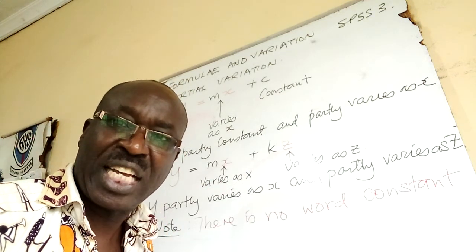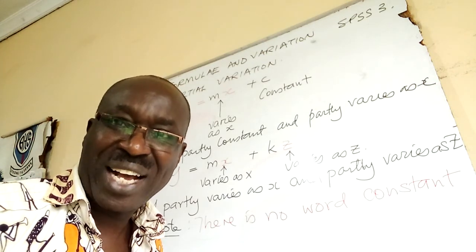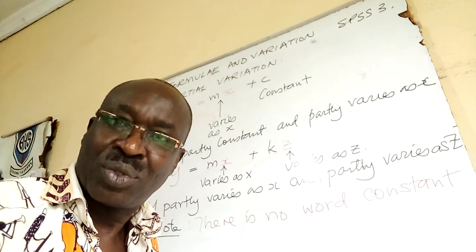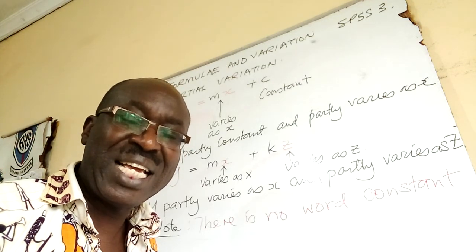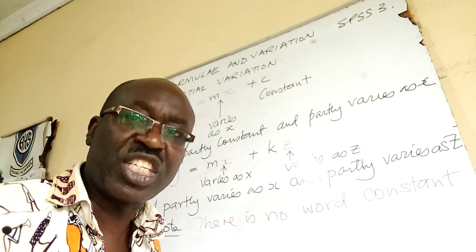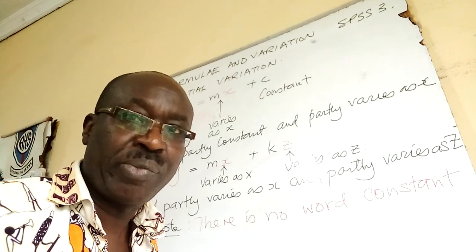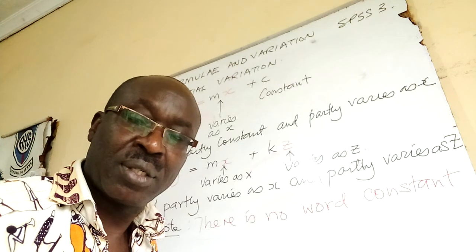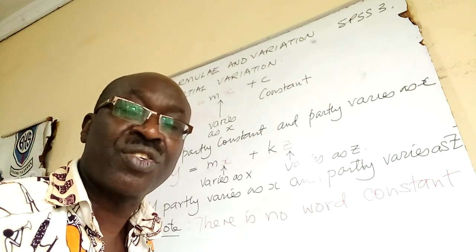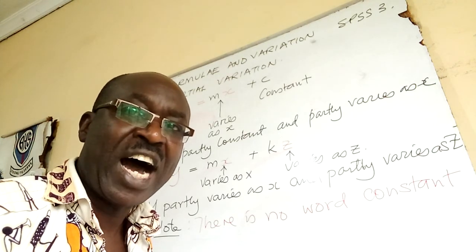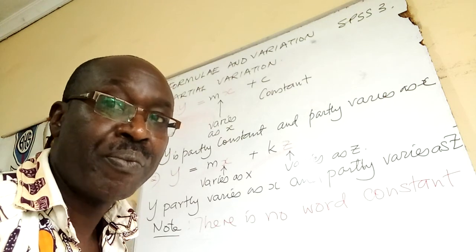First sound. Second sound of partial variation is y is equal to mx plus kz. In the first case, y is equal to mx plus c. C is interpreted as a constant. Y is partly constant. That c should remind you constant.